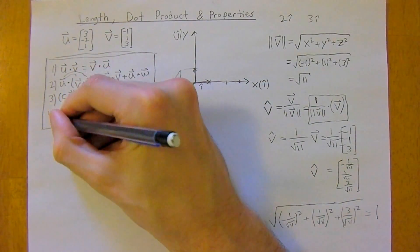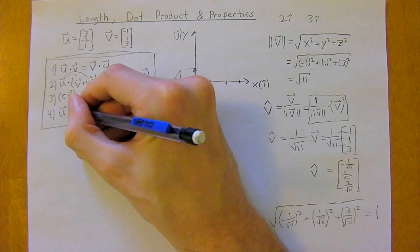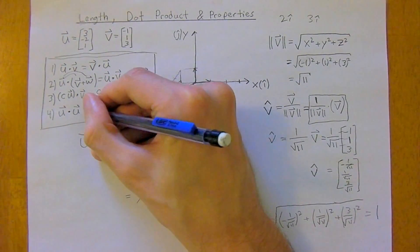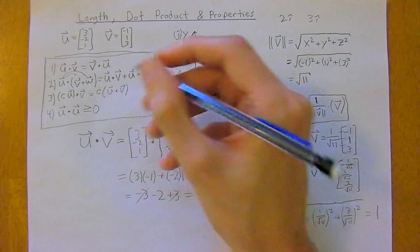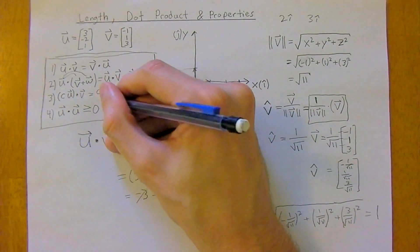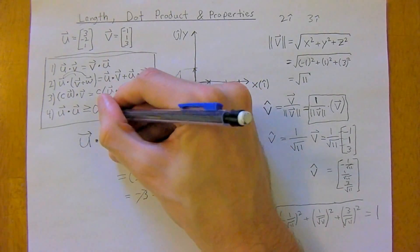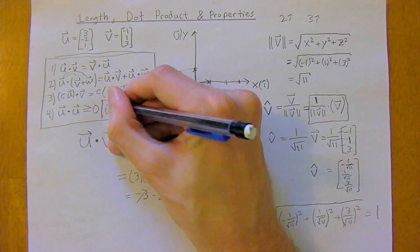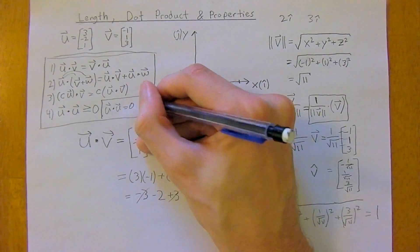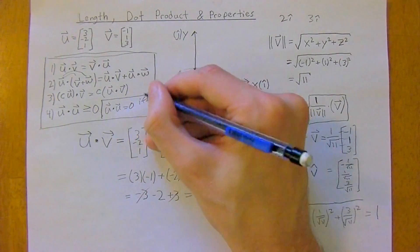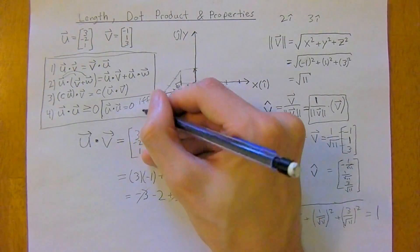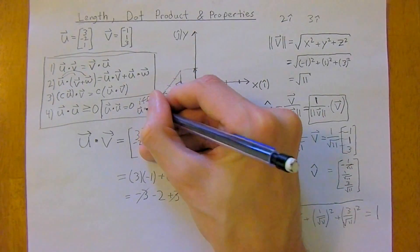And then the fourth one, the final one, is u dot u is always greater than or equal to zero. And also, you get a bonus one, u dot u is equal to zero if and only if, this iff with two f's here is just if and only if, u equals zero.